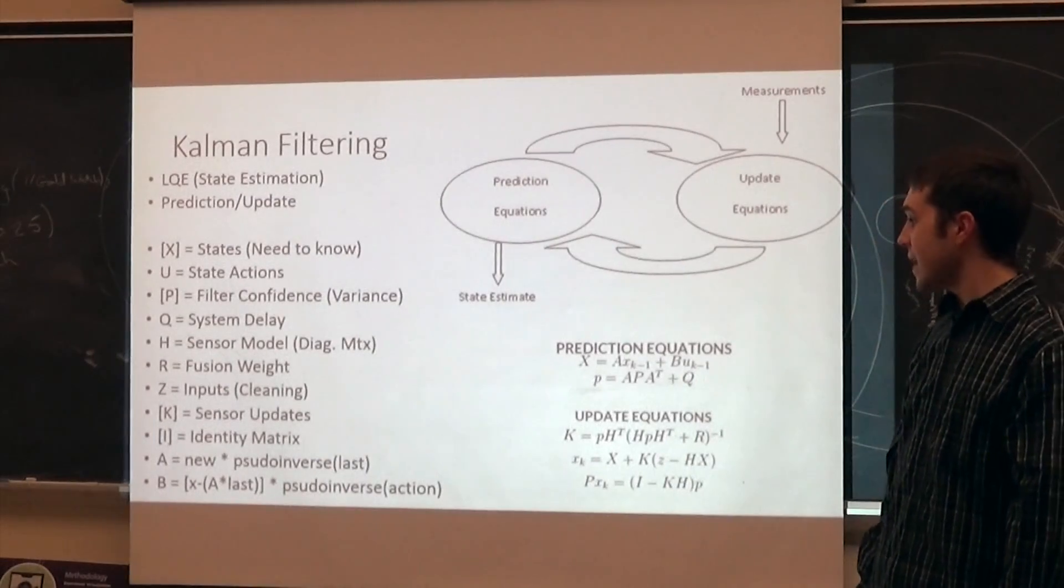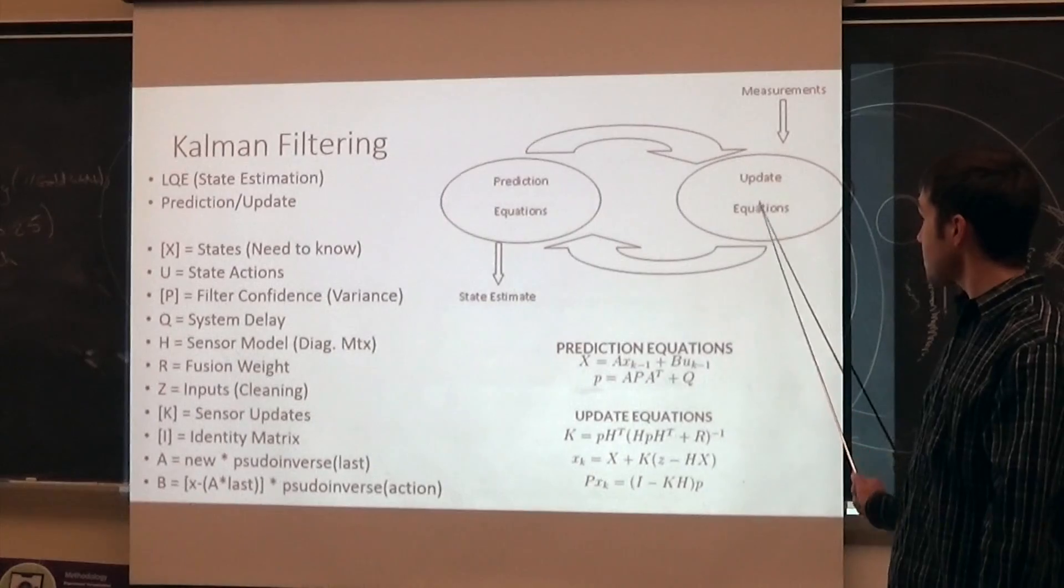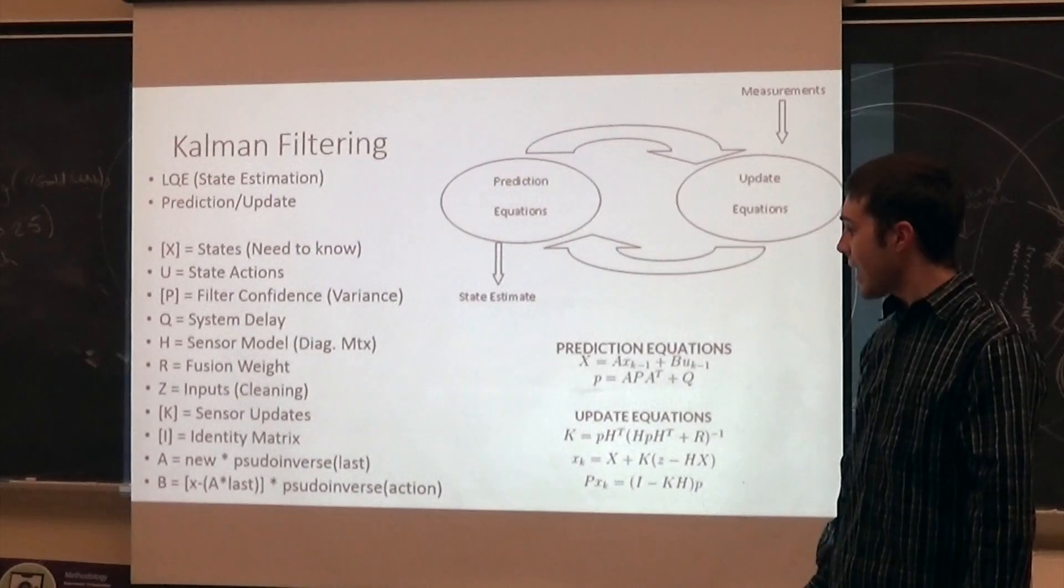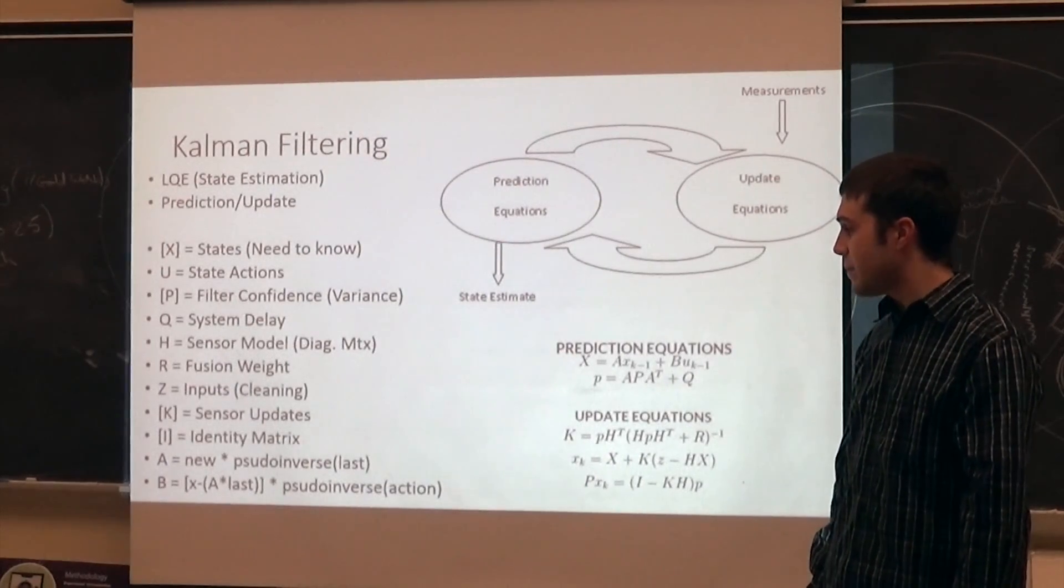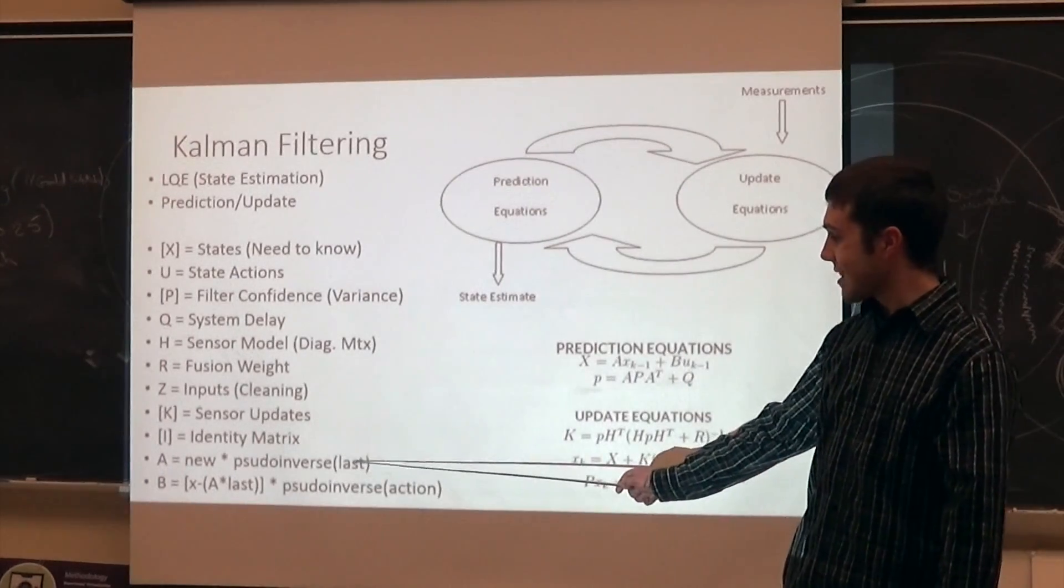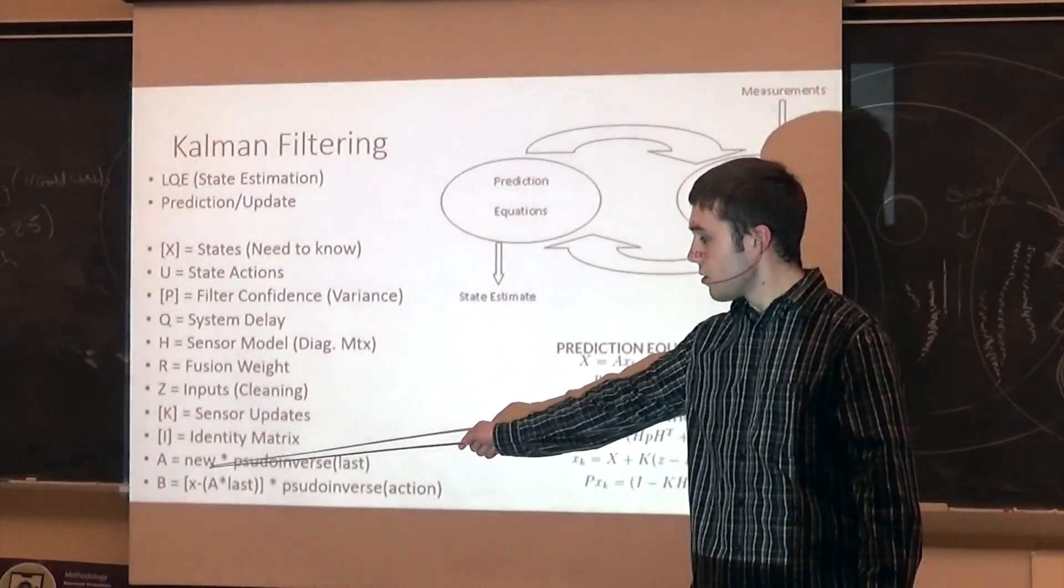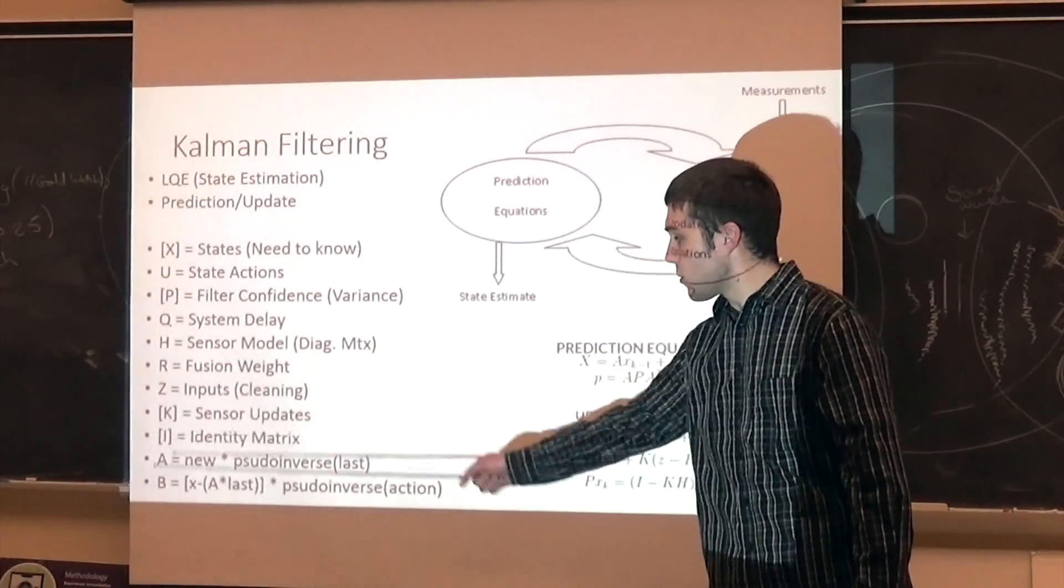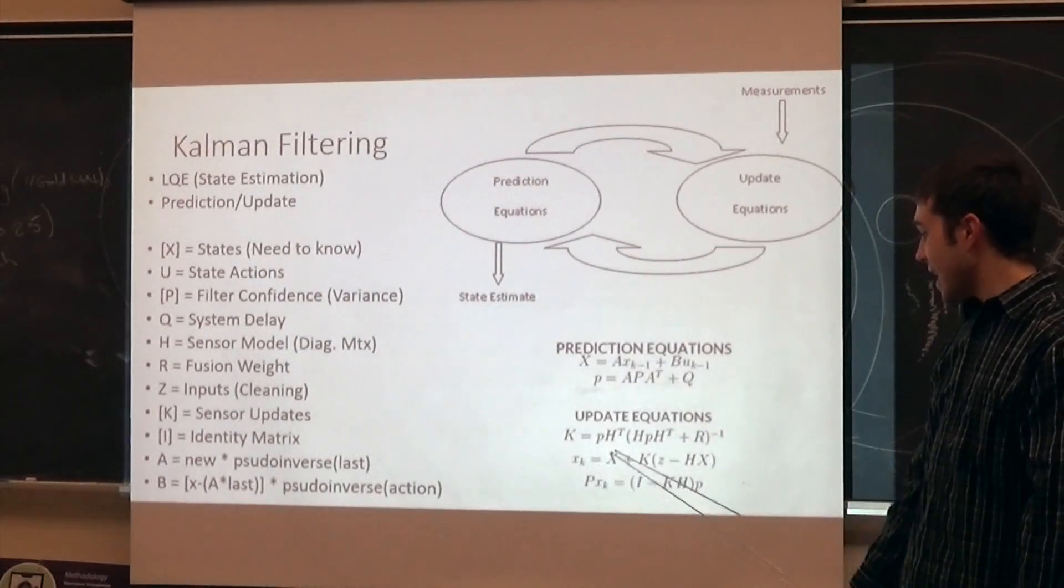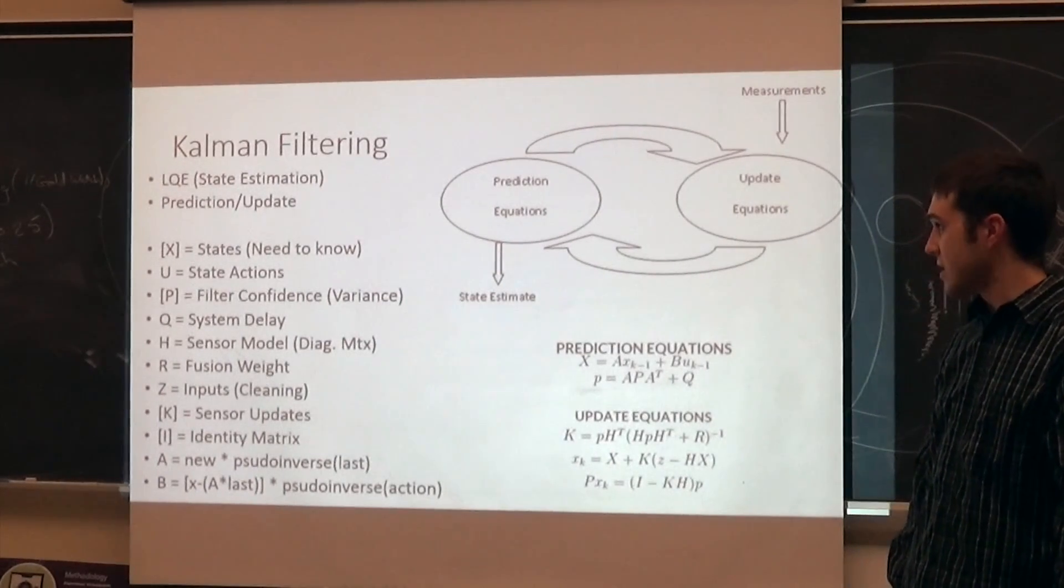I is just the identity matrix. K is the values that are actually updated by the sensor. You can see it right here, the measurements that go into the update equations. And then we have A and B. In our case, we don't need B, because we actually can't find it. A is the only thing we need. It's the last state, the pseudo-inverse of the last state, times the new, like what it's sensing right now, equals R A. And you can see, these equations aren't crazy, but it is pretty advanced and hard to implement, especially on a simple machine like ours.